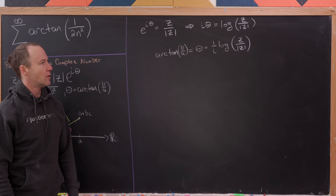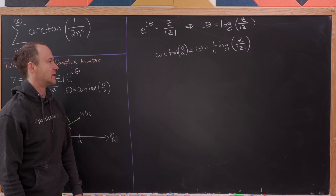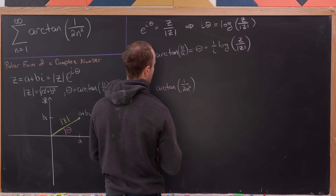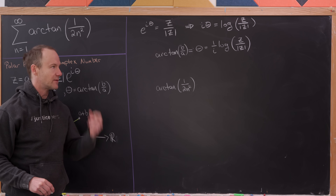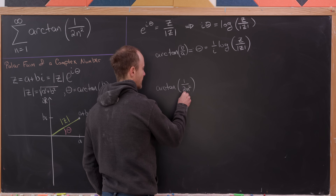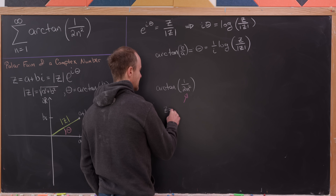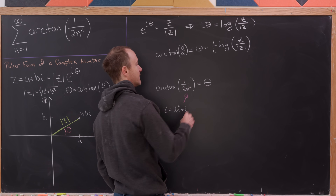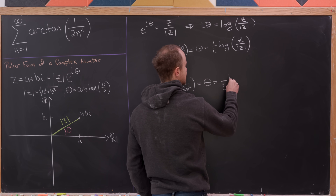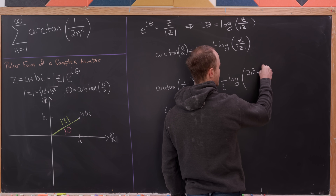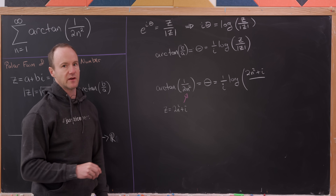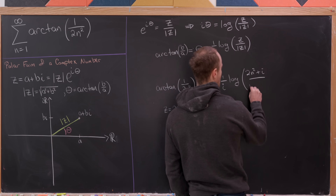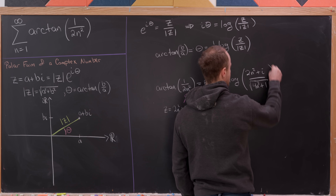Now we want to apply this to our problem. We've got arctan of 1 over 2n squared. What complex number gives that situation? Notice this is of the form b over a if z equals 2n squared plus i — that's pretty clear. Then that's going to equal this theta value, which is 1 over i times the log of 2n squared plus i over the modulus of z. Computing the modulus, we get the square root of 4n squared plus 1.